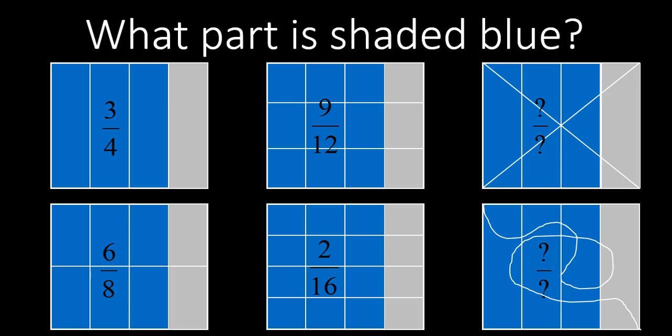It could be six out of eight, it could be twelve out of sixteen, or it could be some squiggly lines. All of these are exactly the same amount.